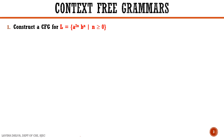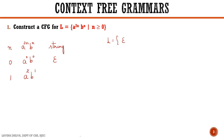Now how do we identify the strings for this particular language? Let us use a pattern of generation. When n is equal to 0, we have a raised to power 0 b raised to power 0, so the string generated is epsilon. When n is equal to 1, we have a raised to power 2 b raised to power 1, so we have two a's followed by a b.